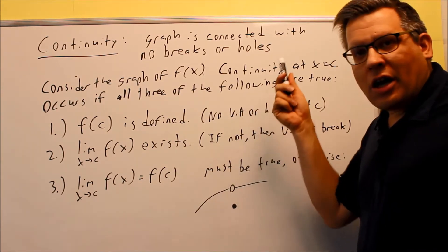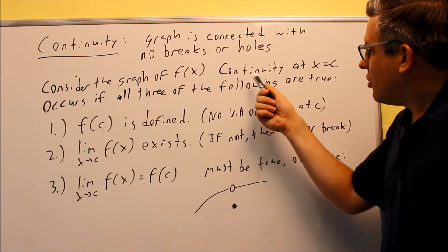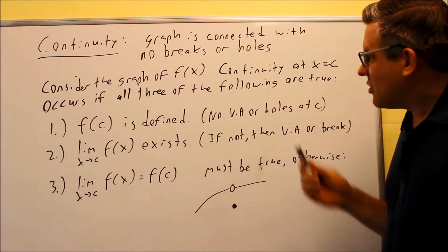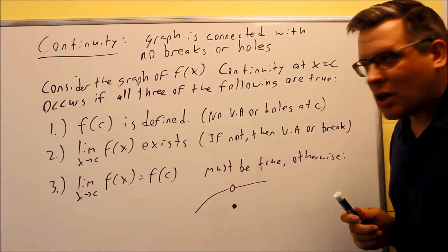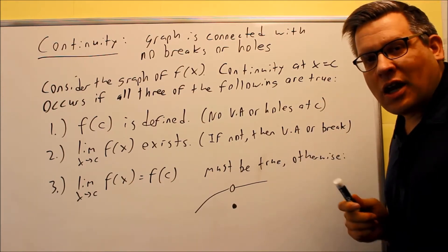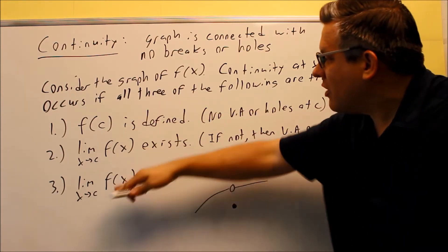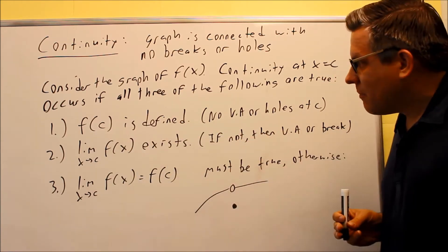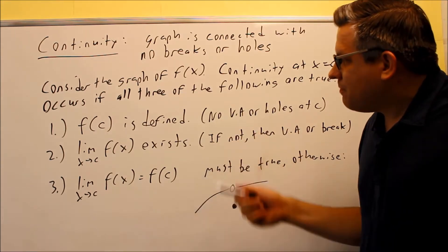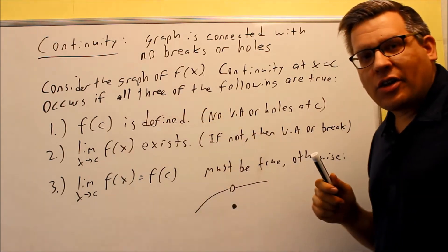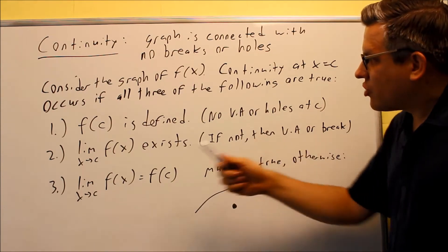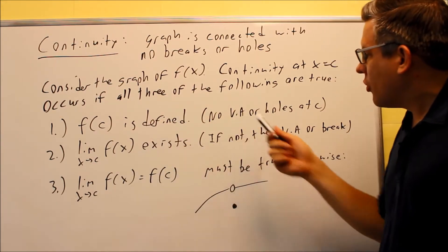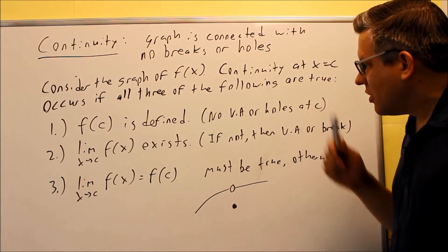We're going to take a look at how you can tell if a graph is continuous at a certain point. We're going to look at the value of x equals c and see if a graph is continuous at that point. In order for it to be continuous, all three conditions must be met. The first one is f of c is defined — if I plug in that value, I should see a closed circle on my graph, I shouldn't be divided by zero. So it's defined: there's no vertical asymptote and there's no holes at c.